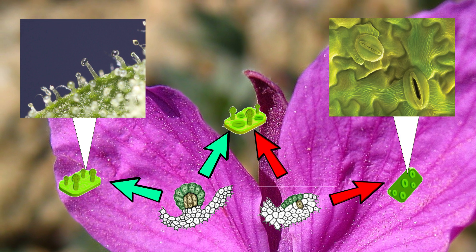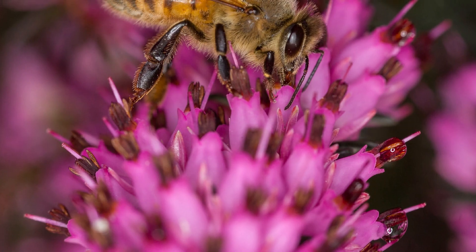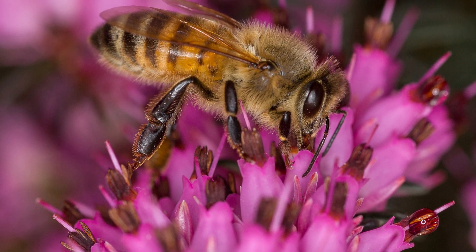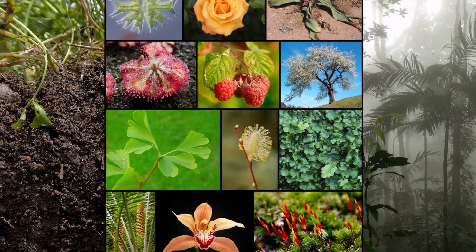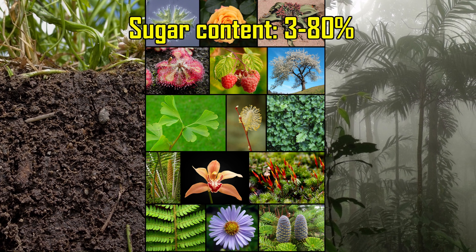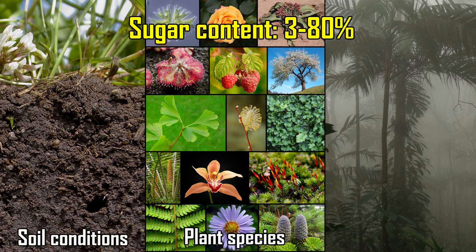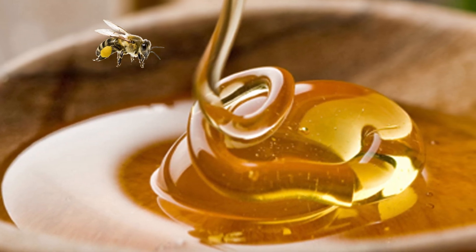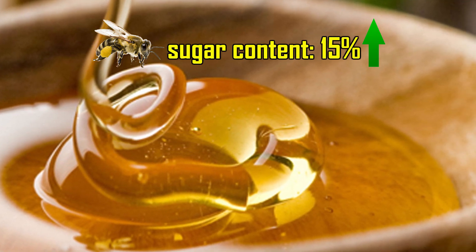Certain nectaries contain both trichomes and stomata. In addition to being directly consumed as food, nectar is also the raw material used by honeybees to produce honey. Sugar content of nectar varies from 3 to 80%, depending upon such factors as plant species and soil and air conditions. However, honeybees rarely gather nectars containing less than 15% of sugars.